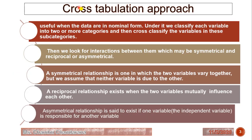The next is the cross tabulation approach. It is useful when the data are in a nominal form. Under it, we classify each variable into two or more categories and then cross-classify the variables into subcategories. We then look for interaction between them, which may be symmetrical, reciprocal, or asymmetrical.